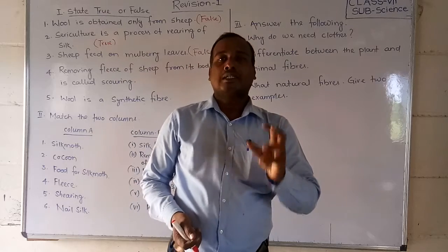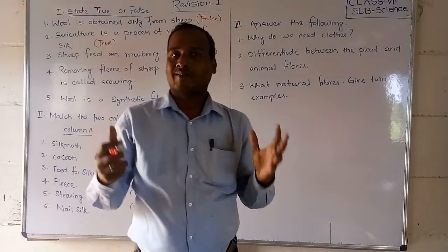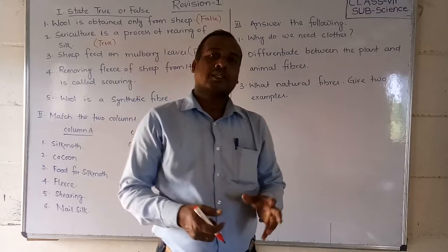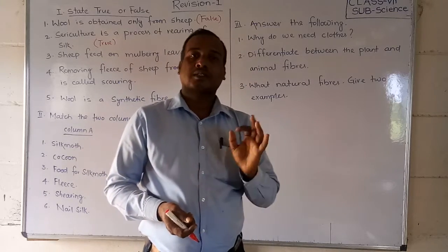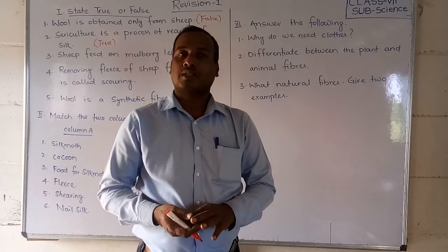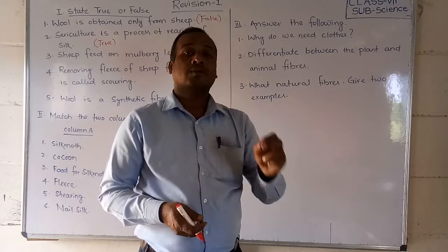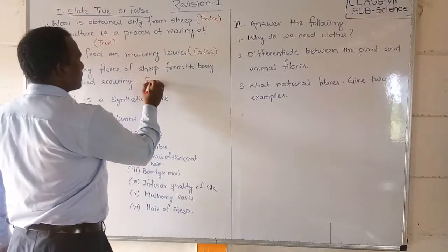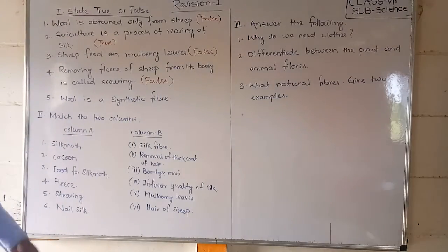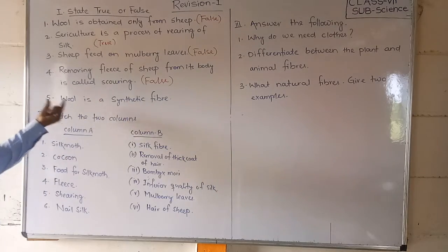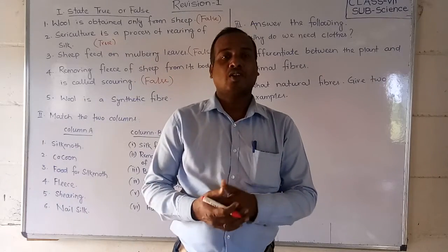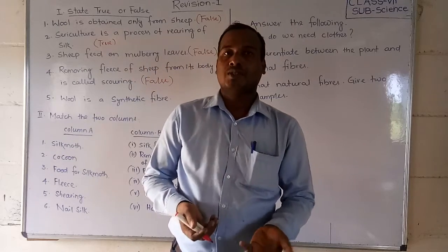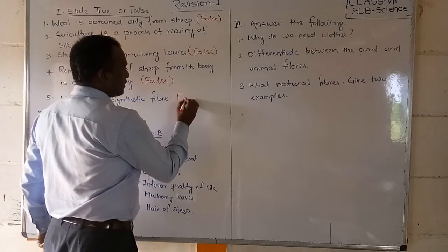Next: removing dust and other things from the hair of the sheep. When we keep all the hair after shearing, we wash them and remove the dust — that process is called scouring. But the question mentions removing fleece from the body of the sheep, which is shearing, not scouring — so that statement is also false. Final statement: wool is a synthetic fiber. That is false because wool is obtained from animals, making it a natural fiber, not a synthetic one.